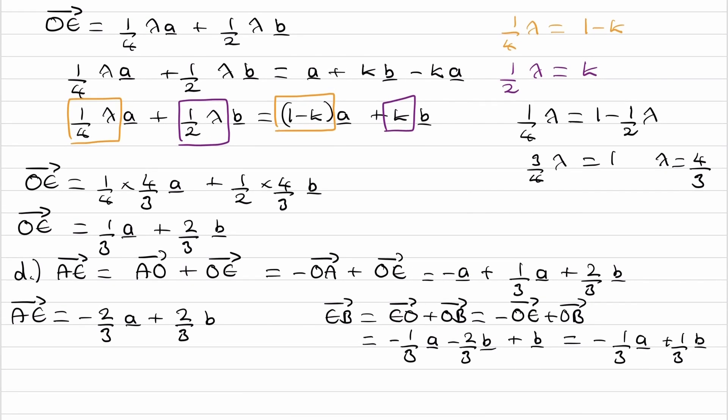And we can see, so AE is this, EB is this. We can see from that that AE is 2 lots of EB. And therefore AE to EB is 2 to 1.